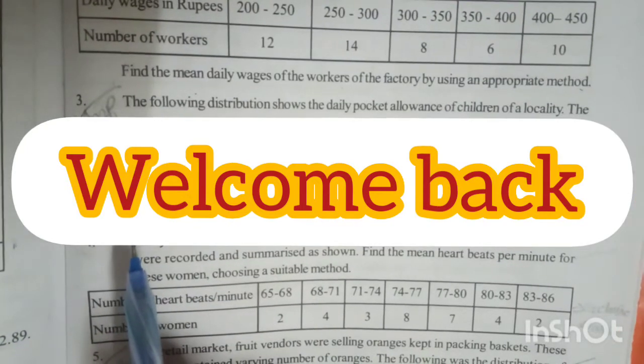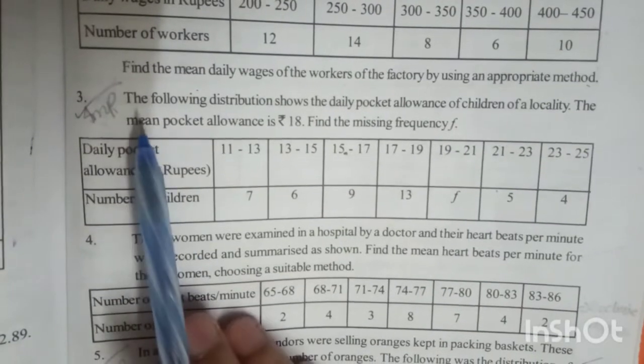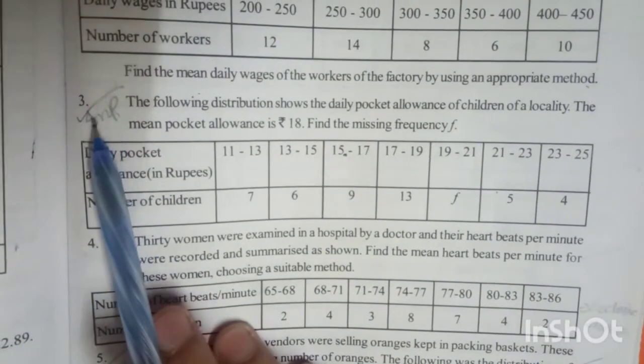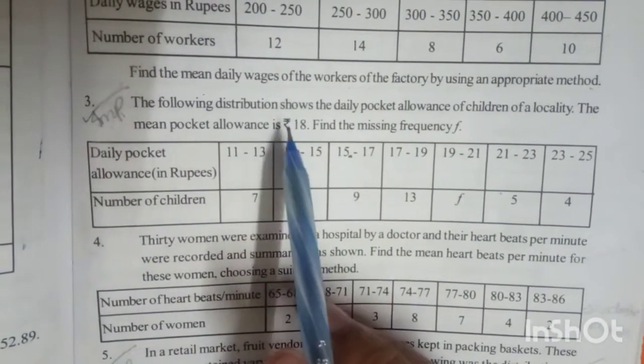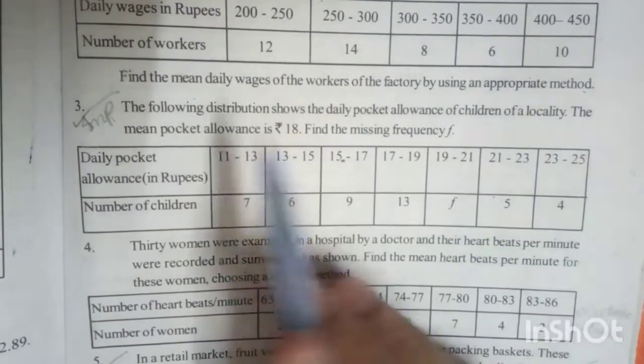Hello friends, welcome back to my YouTube channel. In this session I'm going to explain exercise 14.1, third sum. The following distribution shows the daily pocket allowance of children of a locality. The mean pocket allowance is 18 rupees. Find the missing frequency f.